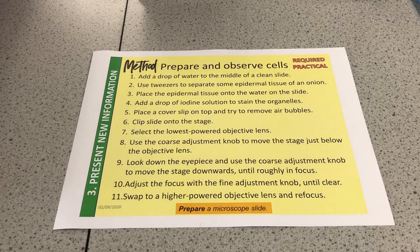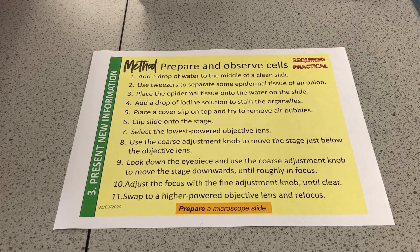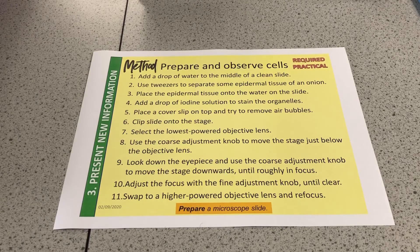Quite often in exams we see six-marker questions asking you to write a method, particularly for required practicals. Here is an outline: use tweezers or forceps to separate some of the epidermal tissue of the onion — that thin layer between the layers. You can add a drop of water to help it sit flat. Add a drop of iodine solution to stain the organelles and subcellular structures, then place the cover slip on top.